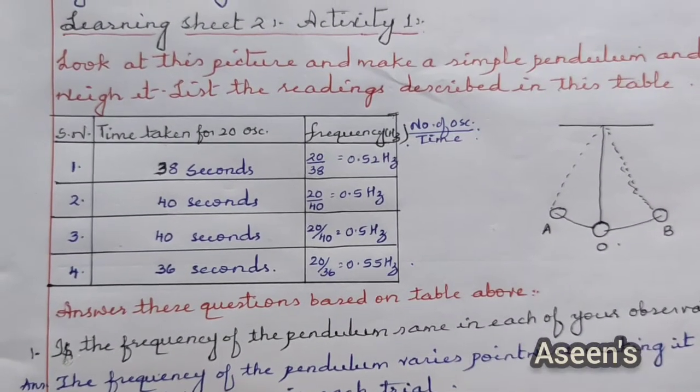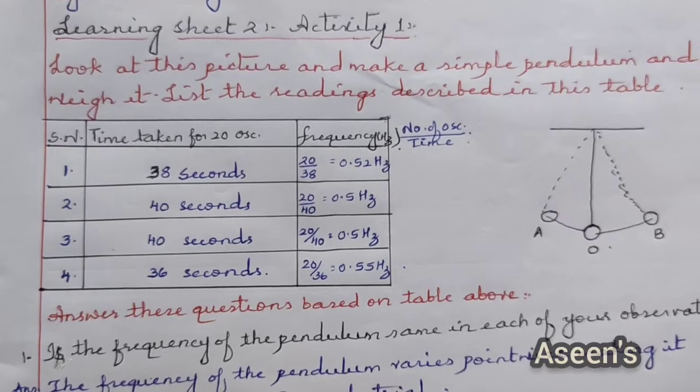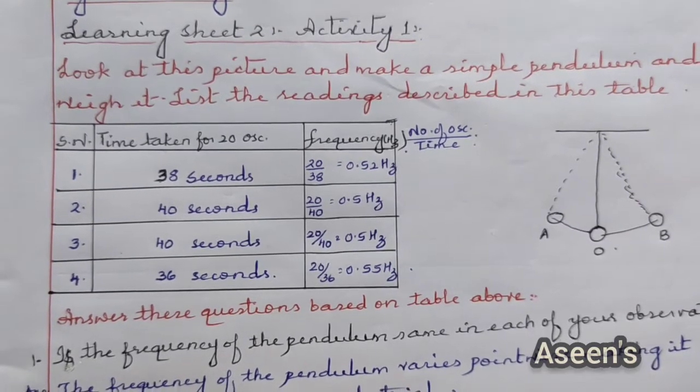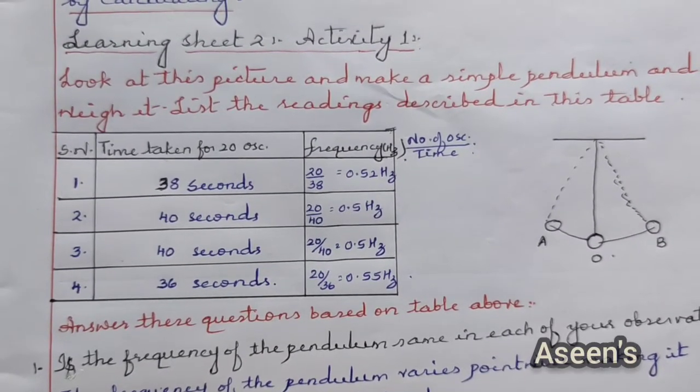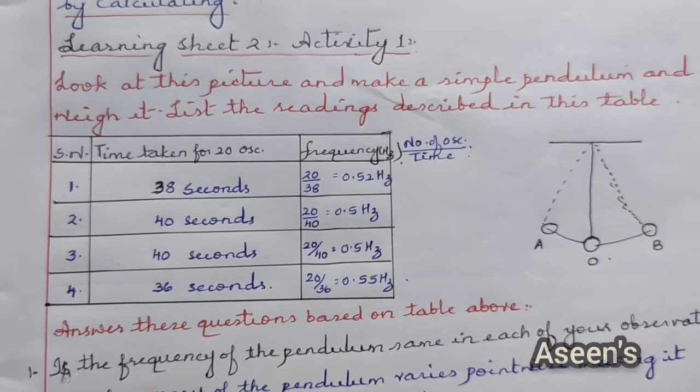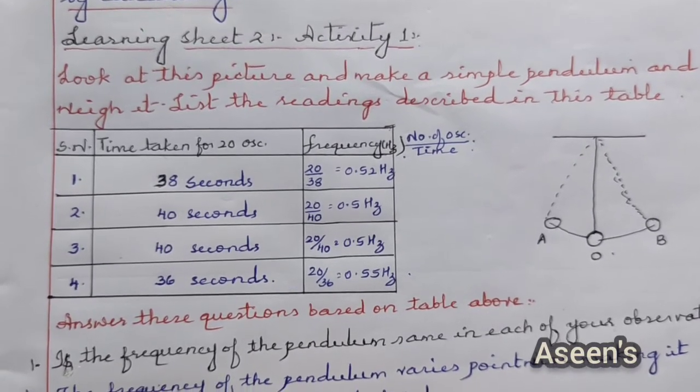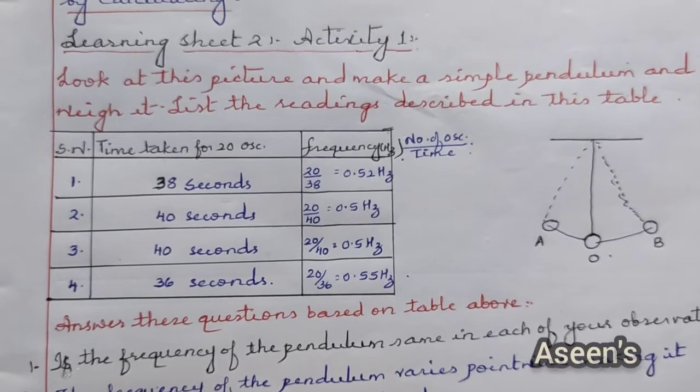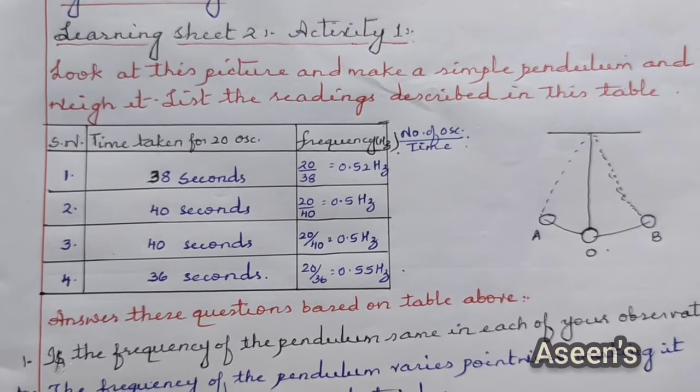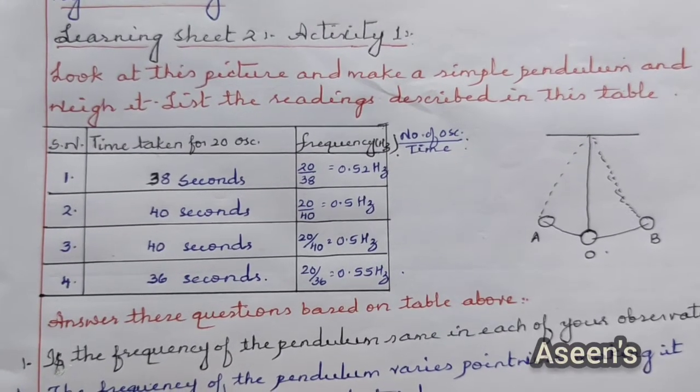Hello everyone, welcome back to Aseen's. In today's video, we will be discussing Learning Sheet 2 for the chapter Friction of Class 8th syllabus. Under Learning Sheet 2, Activity 1, look at the picture and make a simple pendulum.